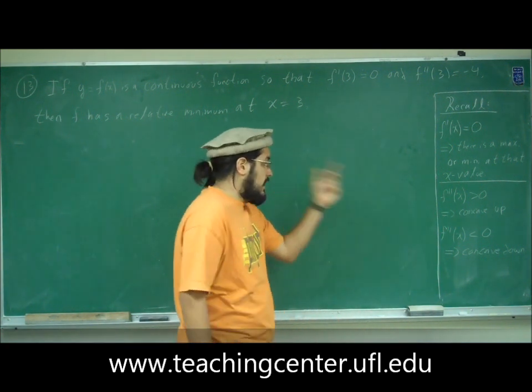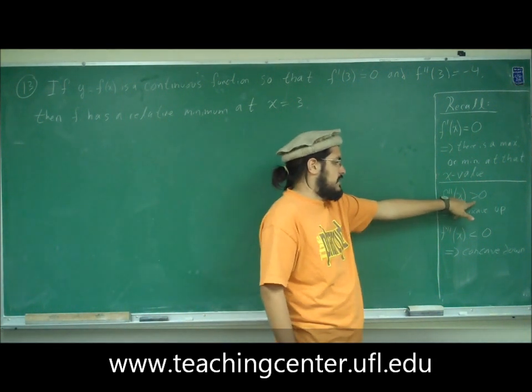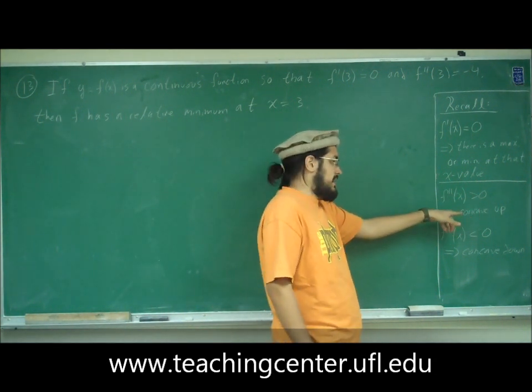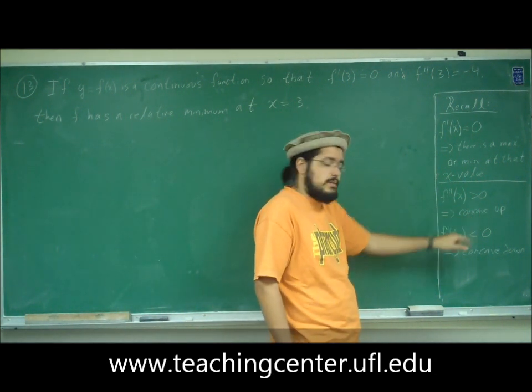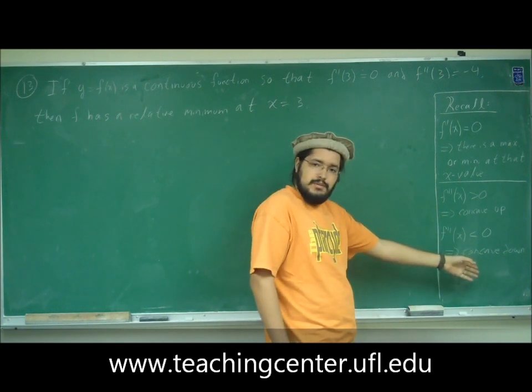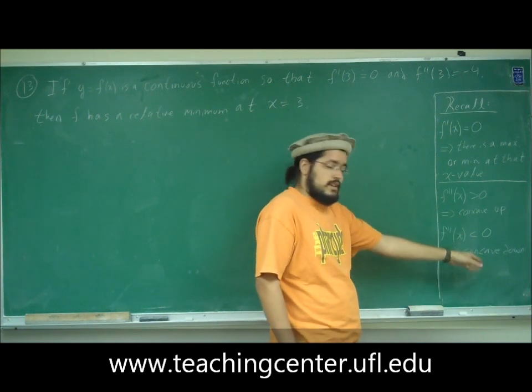Another thing, f double prime of x, if that is greater than 0, this implies that at that x value it's concave up. If it's less than 0, then it implies that at that x value it's concave down.